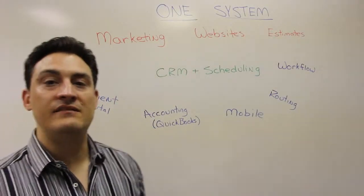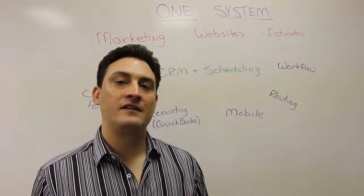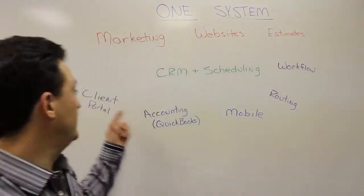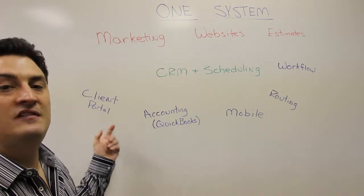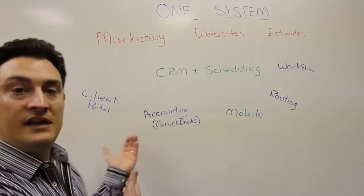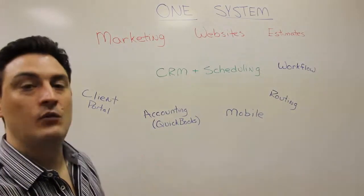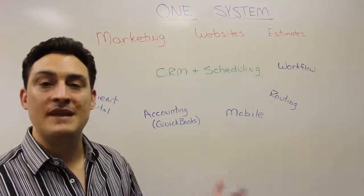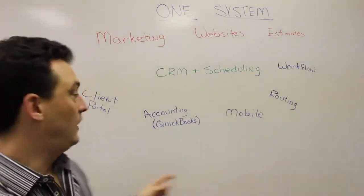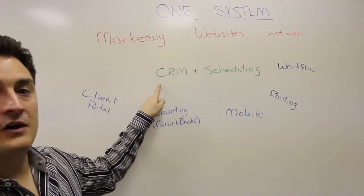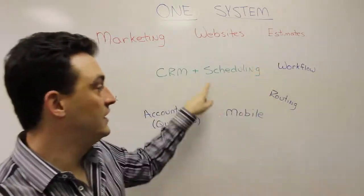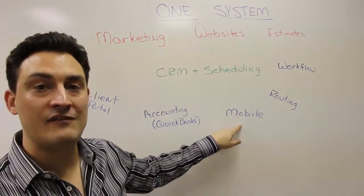Now, once you send a client an invoice or once a client is thinking to themself, I wonder how much money I owe, they can go to the client portal and they can see all kinds of things about their business. Or if they're a homeowner, they can see what their account balance is, print invoices, make requests all connected back into the main system. A request that they make flows to the CRM that could flow to scheduling or maybe flow to an estimate and eventually out to a mobile to have the work performed.